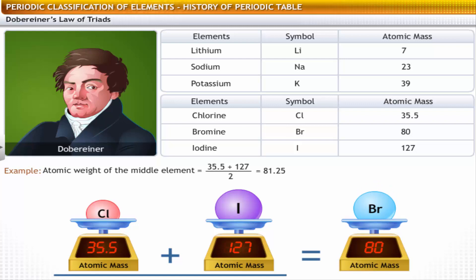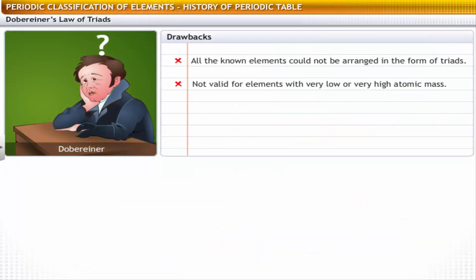While this law worked for some elements, it was not a success because all the known elements could not be arranged in the form of triads. The law did not hold good for elements with very low or very high atomic mass.